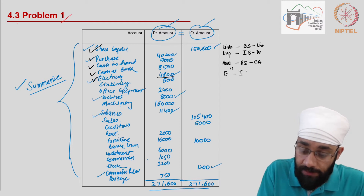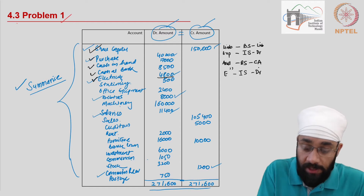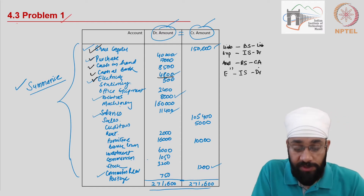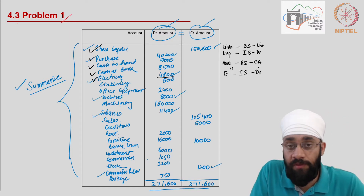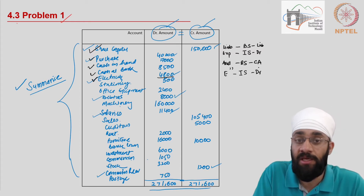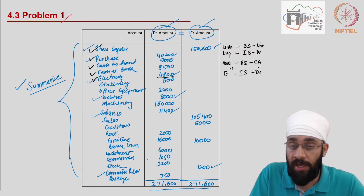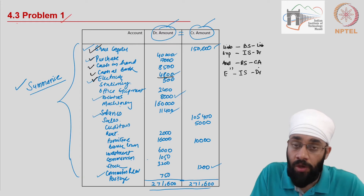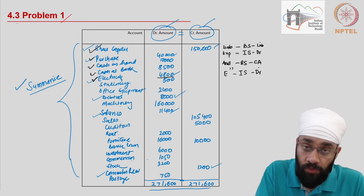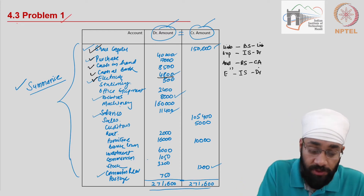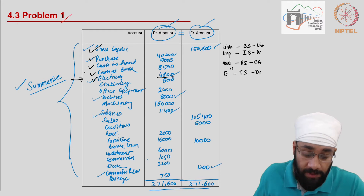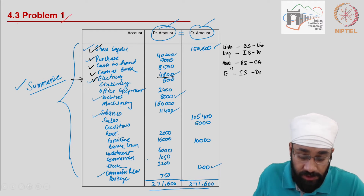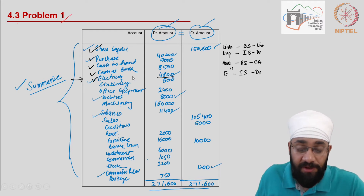Next is electricity — 4,800. This is an expense; it will go to the income statement on the debit side. One decision we need to take is whether to treat electricity as factory electricity, a direct manufacturing expense, or an indirect expense relating to sales. Since it's not clarified in this question, we are going to treat this as a direct expense.